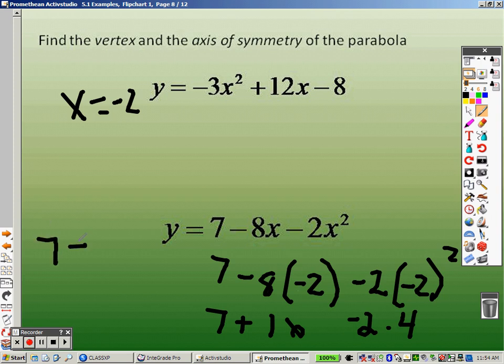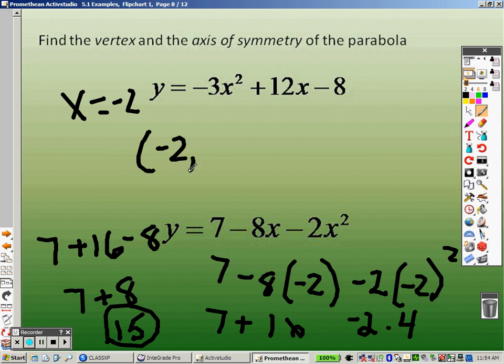So I have 7 plus 16, and that's a negative 8. So really, I have 7 plus 16 minus 8. Well, 16 minus 8 is 8. So really, 7 plus 8 is 15. So when we plug it all in, we get 15 for y. So I know that my point is negative 2, 15.